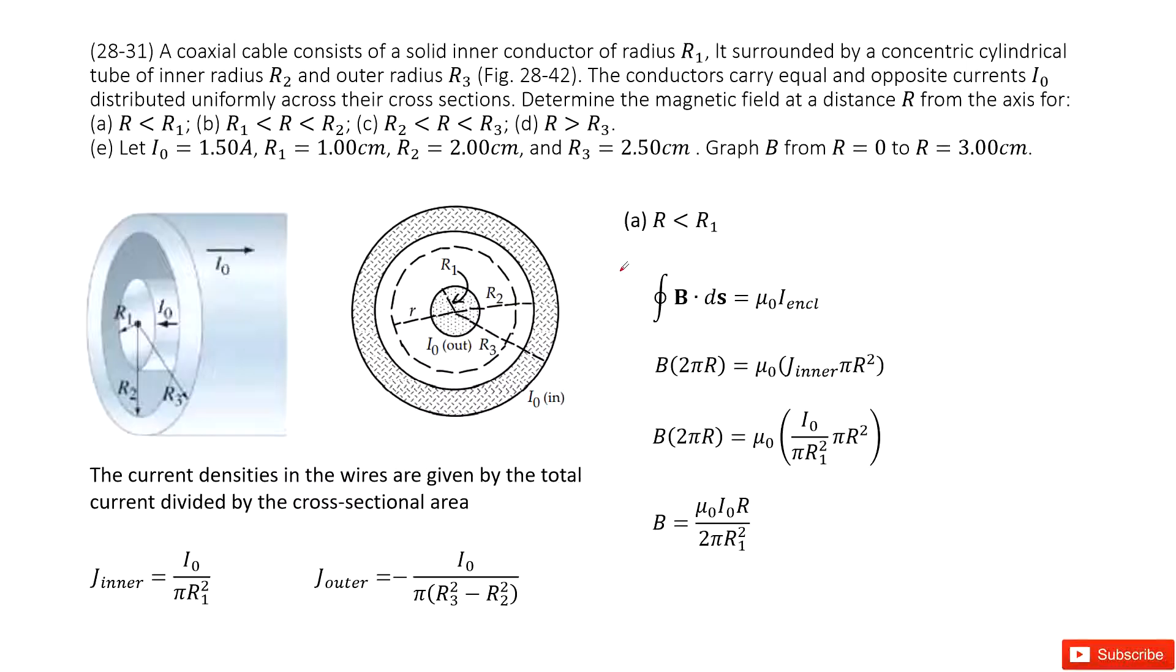We can see we have a coaxial cable consisting of a solid inner conductor and an outer conductor. The keyword 'conductor' tells us the current is uniformly distributed. Therefore, we can write down the current density for the inner part and outer part by using the current divided by the cross-sectional areas.